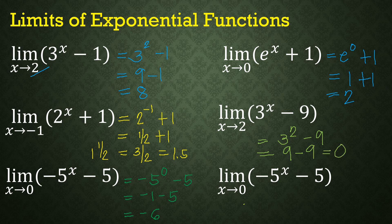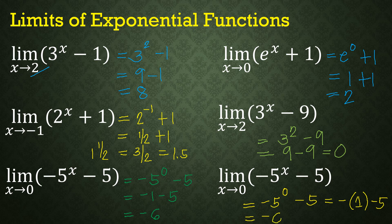And the last example: the limit of -5^x - 5 as x approaches 0. Substituting x = 0: -5^0 - 5 = -1 - 5, which equals negative 6.